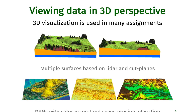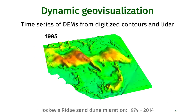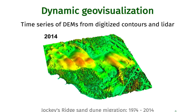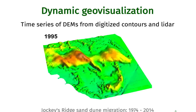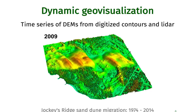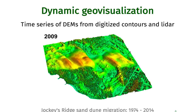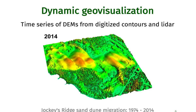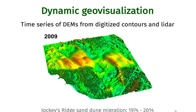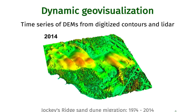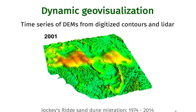Another example is three-dimensional visualization, which we will use extensively since many assignments and lectures are focused on topography and three-dimensional data. We will also discuss dynamic geovisualization. Much of our data now comes as time series, and we are very interested in the evolution of landscape, changes in landscape, and dynamic processes — and how we can visualize these landscapes in a dynamic way.